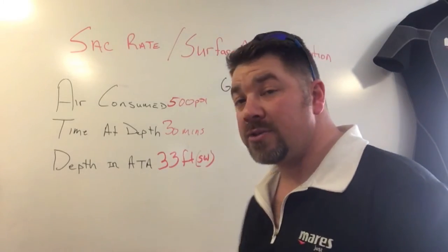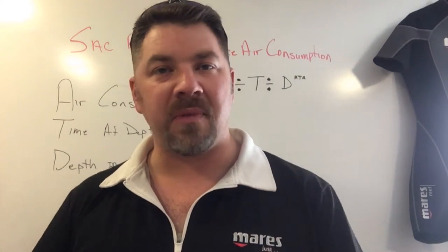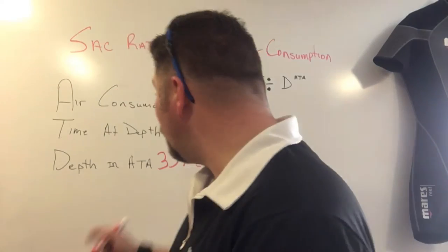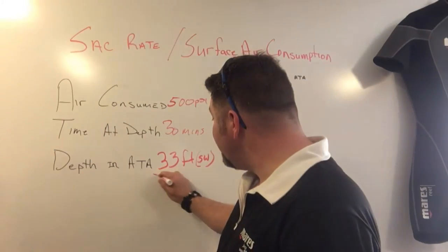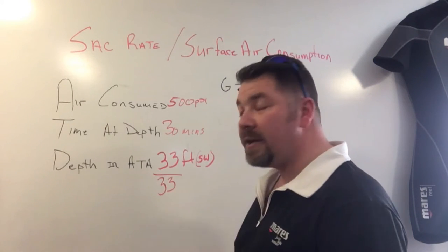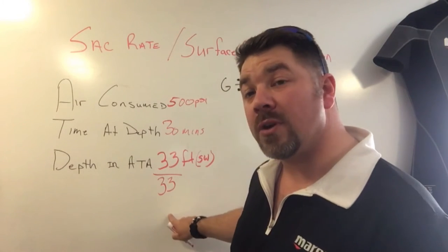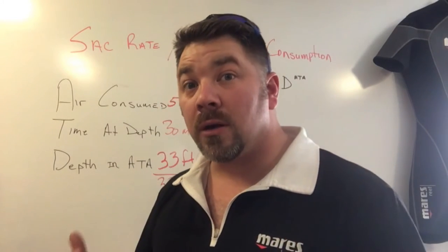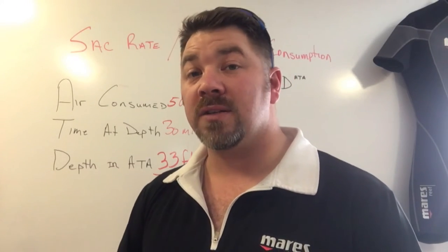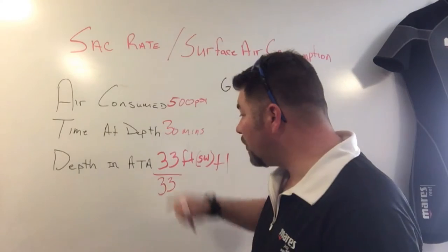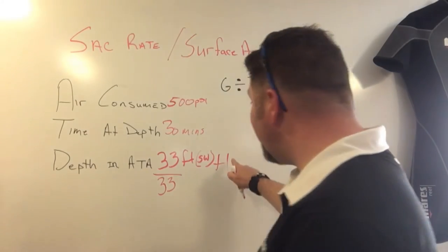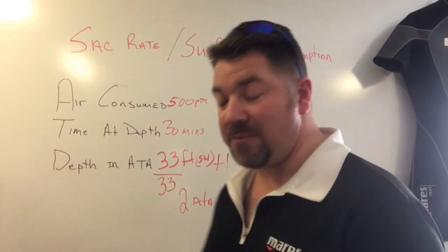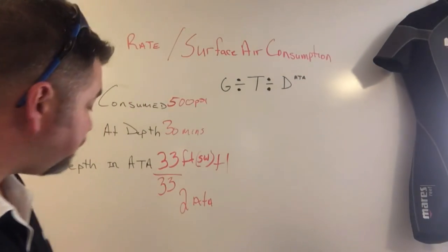When figuring out depth in atmospheric pressure, we need to know the absolute atmospheric pressure on the diver at that depth. To calculate it, take your depth and divide it by the water type constant — 33 for saltwater or 34 for freshwater — then add one. Since every 33 feet of saltwater equals one additional atmosphere, 33 ÷ 33 = 1, plus 1 at the surface gives us 2 ATA total absolute atmospheric pressure.